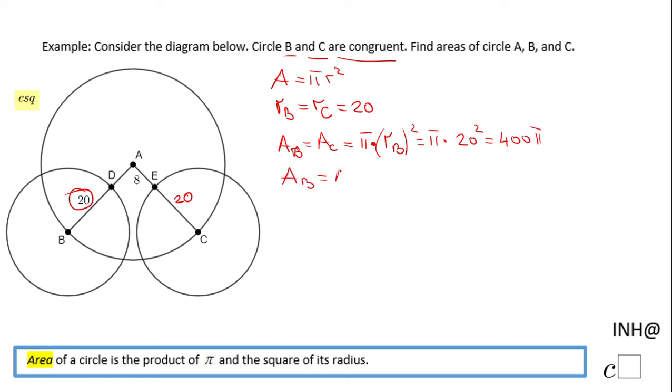So the area of circle B and circle C are both 400π.